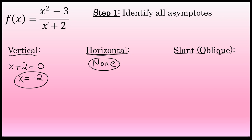For more information about horizontal asymptotes, see the description of this video. Slant asymptotes are also related to the degrees of the numerator and denominator. They only occur when the degree of the numerator is exactly one larger than the degree of the denominator, and that's what we're dealing with here — degree 2 in the numerator and degree 1 in the denominator. There is a slant asymptote in the graph of this function.